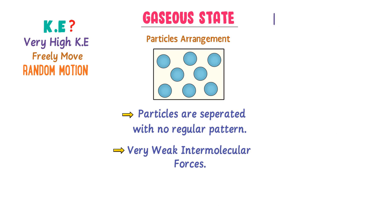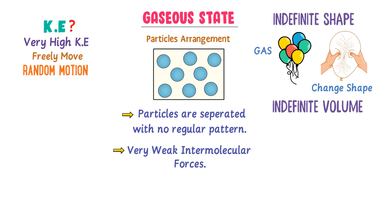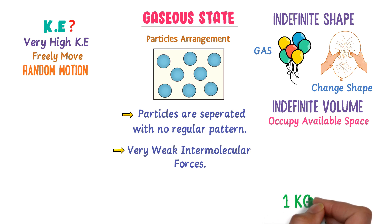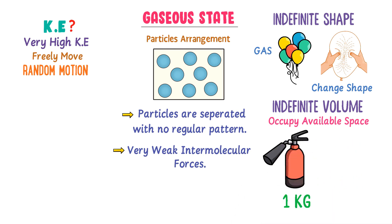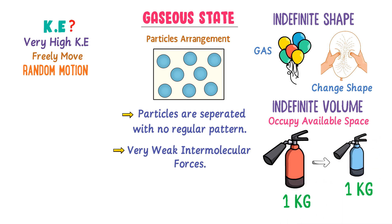On the other hand, gases have indefinite shape. For example, consider gas in these balloons — when you exert force on them, you can easily change the shape of the balloons, so you can change the shape of the gas. Also, all gases have indefinite volume, meaning they occupy all the available space. For example, 1 kg of gas can occupy all the available space in a big cylinder, and if you transfer it to a smaller cylinder, it will again occupy all the available space inside.